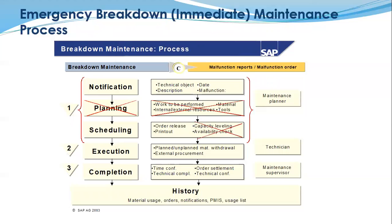The next process is the emergency breakdown process. When equipment breaks down, the notification and scheduling are combined into one step — as soon as we receive information about the equipment, we quickly withdraw materials to fix the equipment and resolve the problem. After resolving the problem, we create maintenance reports to document the causes and the activities that were performed to correct the situation, and then we complete the maintenance.